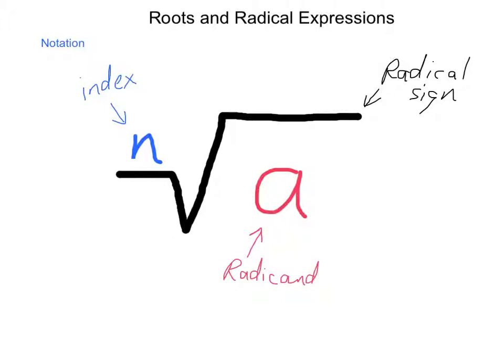From a prime factored position, the index tells us how large the groups are that we're looking for. If you are dealing with square roots, the index is a 2, and that is implied — so if you don't see a number on the index, it is implied to be a 2. For example, the square root of 9: 9 is 3 times 3, so the square root tells us we're looking for pairs of the same item. Here we have a pair of 3s, so it simplifies — it acts almost like a filter — and a single 3 comes out.